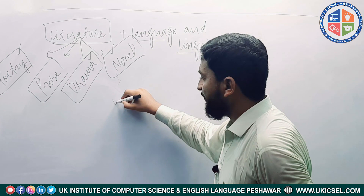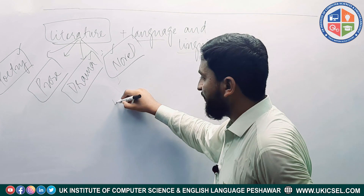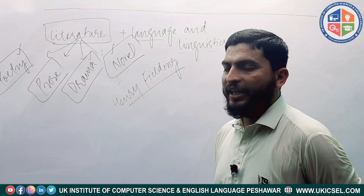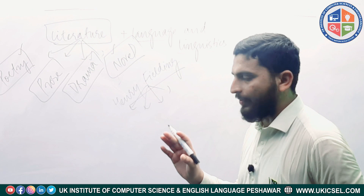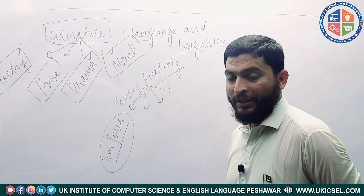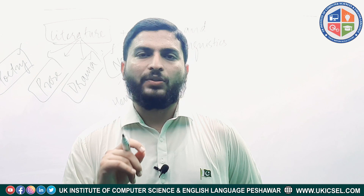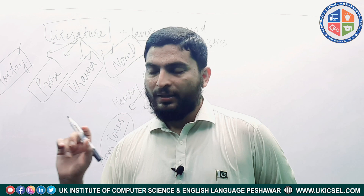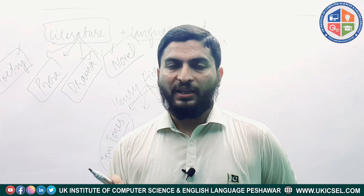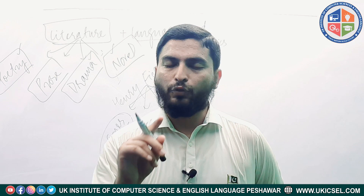For example, there is a novelist named Henry Fielding. You must know the novels he has written. If a novel title like Tom Jones is given in an MCQ, the question would be: 'Tom Jones is a novel written by ___.' The options would be: A) Jane Austen, B) Henry Fielding, C) Jean Rhys, D) None of these. You have to choose one.